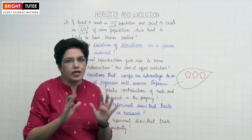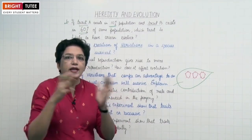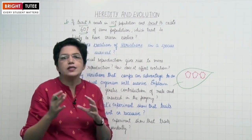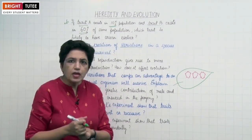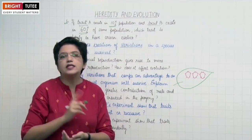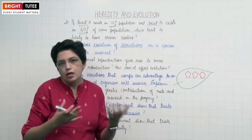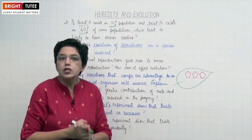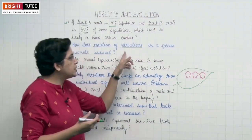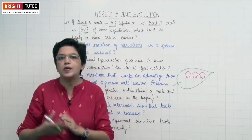In asexual reproduction, variations are very limited. But in sexual reproduction, during DNA copying and the combination of fertilization of male and female gametes, certain variations can take place. DNA copying is not 100% accurate — there may be some slight change. So the new generation will be a little different from the parent generation. If these variations are favorable, then the next species will survive.